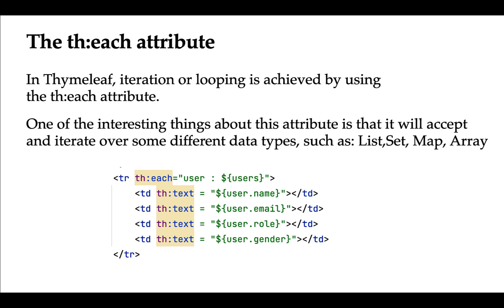Hi everyone, welcome back. In this lecture we'll take a look into the th:each Thymeleaf attribute. In Thymeleaf, iteration or looping is achieved by using the th:each attribute. In Java we use a for loop or for-each loop to iterate over a list of elements. Similar to that, Thymeleaf provides the th:each attribute to iterate or loop over a list of elements.